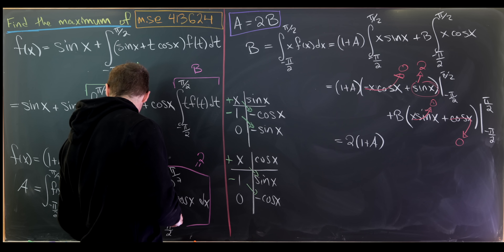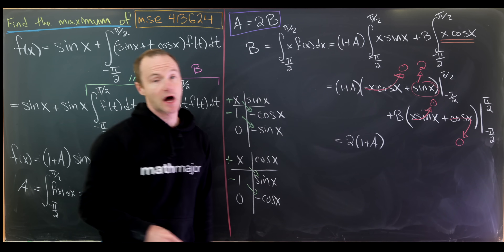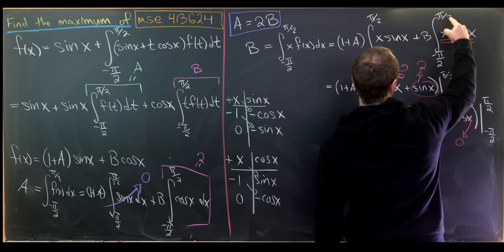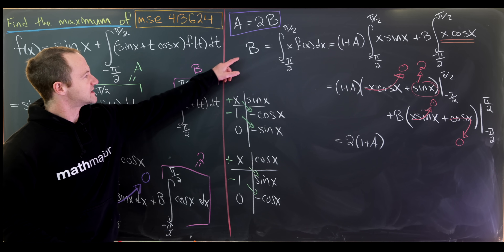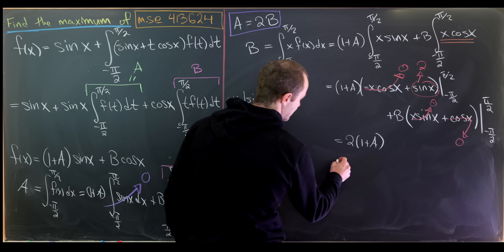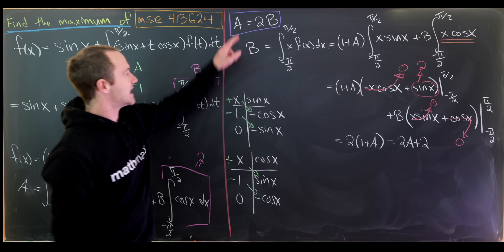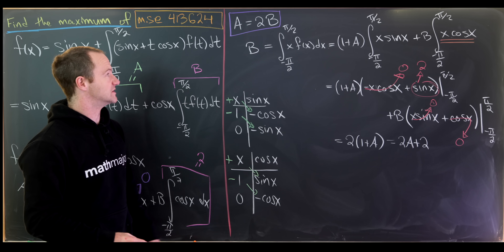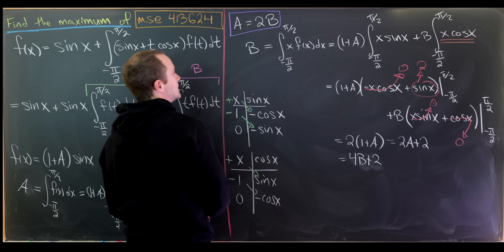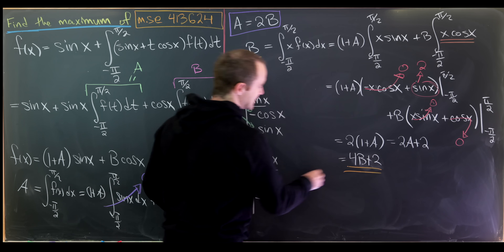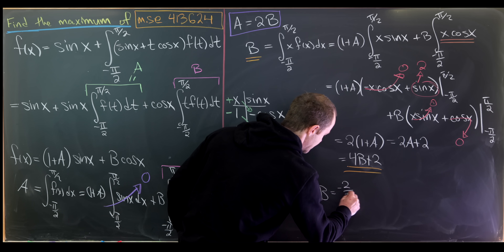So we have B equals 2 times 1 plus A, which is 2A plus 2. Combined with A equals 2B, let's plug in A equals 2B: we get 4B plus 2 equals B, and solving gives B equals negative 2 over 3.